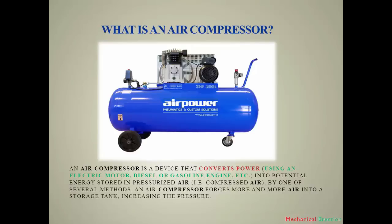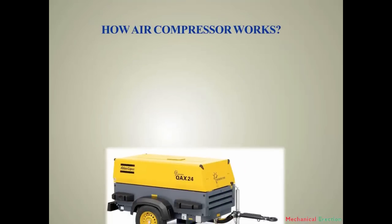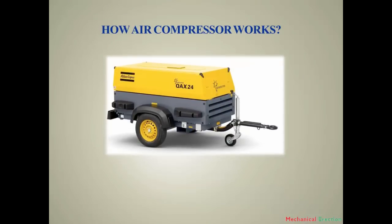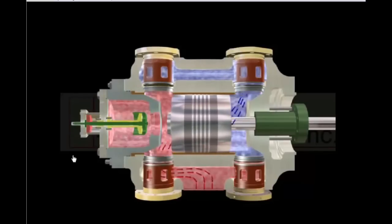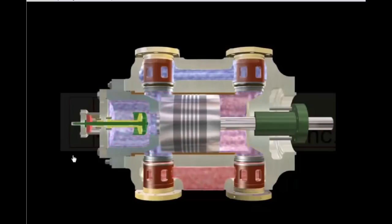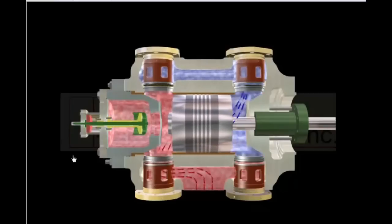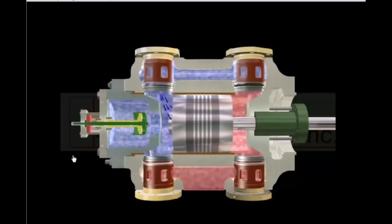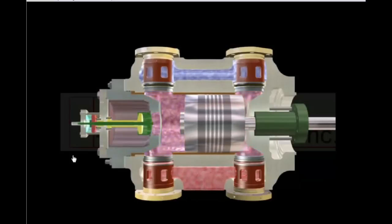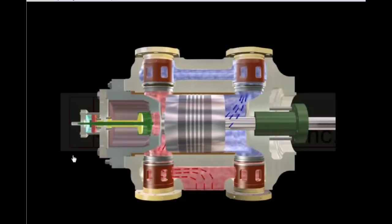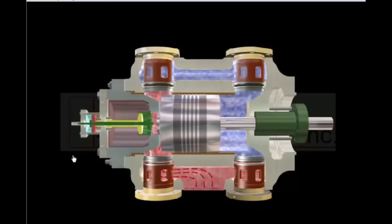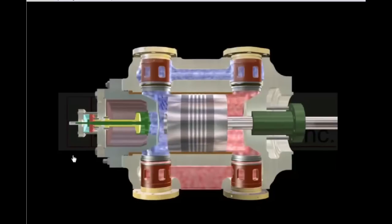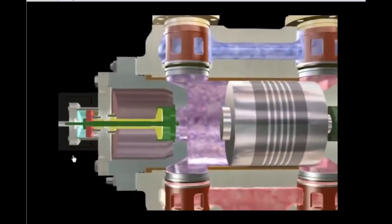Now we see how an air compressor works — we will see an animated video. Dear viewers, you are now viewing a double-acting compressor cylinder. In this type of cylinder, it works for both air suction and air compression — two operations done at a time. Please look carefully: air suction, then compression.